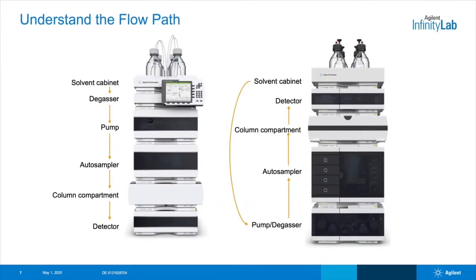Here's a diagram showing two basic instrument configurations. The instrument setup and the way they're stacked might be slightly different, but the flow path will generally be the same. In both cases, we're moving from the solvent cabinet to the degasser, pump, auto sampler, column, and detector.